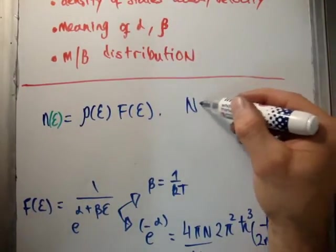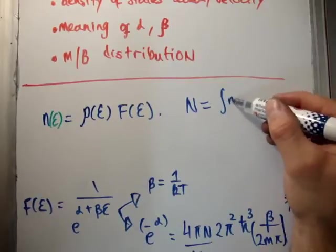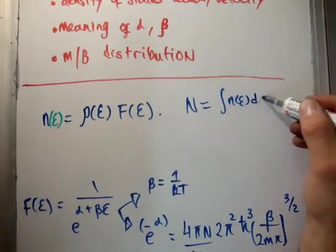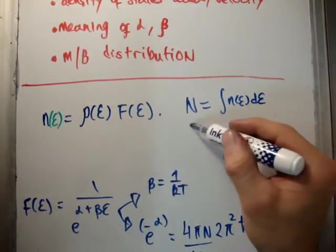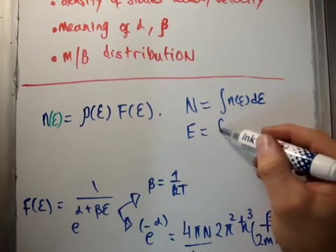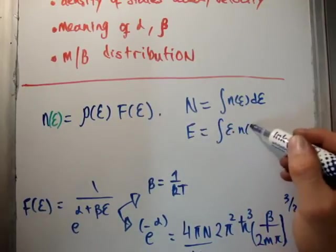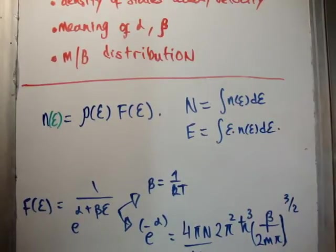Great stuff. So, how do we get the total number of particles? The total number of particles is the integral of n of epsilon d epsilon. And the energy, of course, is equal to the integral of epsilon, n of epsilon d epsilon. Something I am sure you have seen quite a few times. In actual fact, that is what we use in order to calculate alpha and beta.